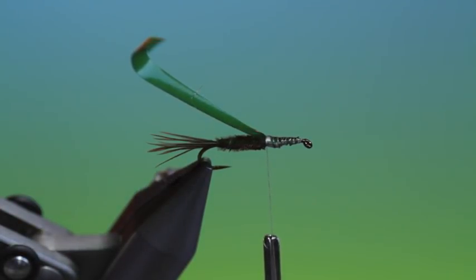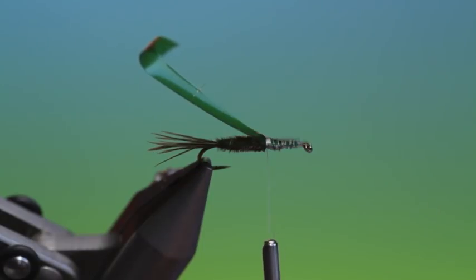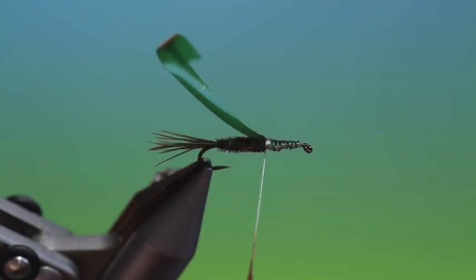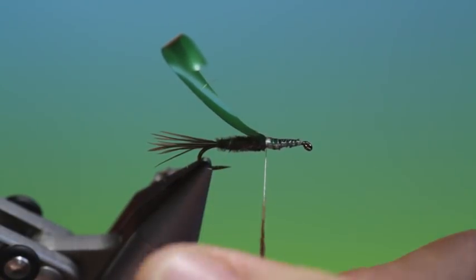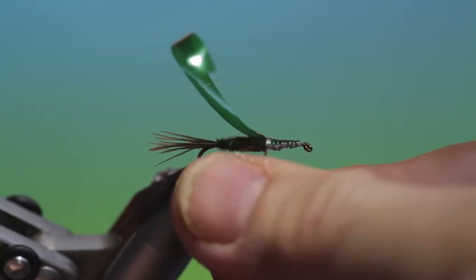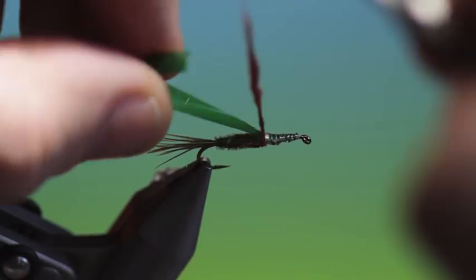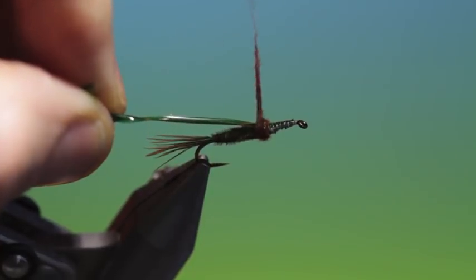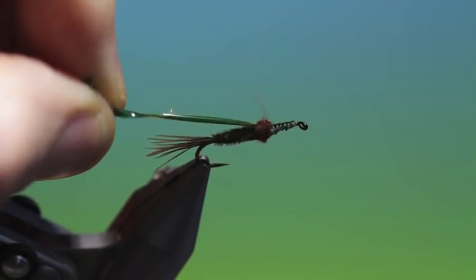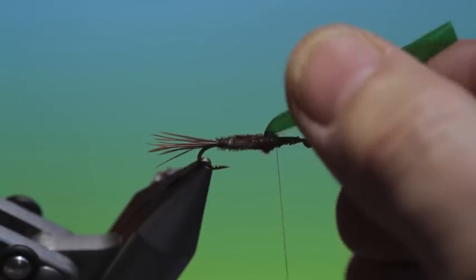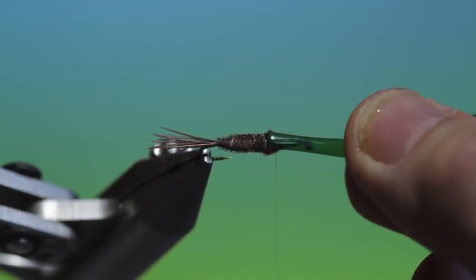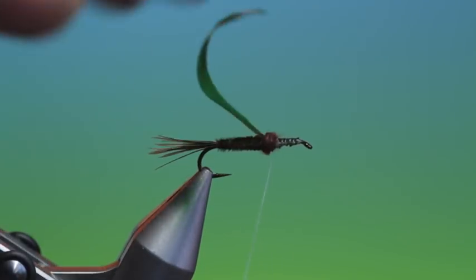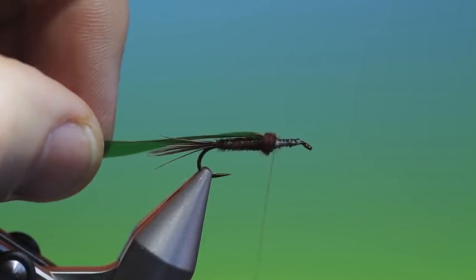Then we need a bit of buggy dubbing. Now I just want a little bit here, just to push the flexi body over into the rear body. What this does is we get a nice tight wing case tight into the body and over the thorax. Just pull that back.